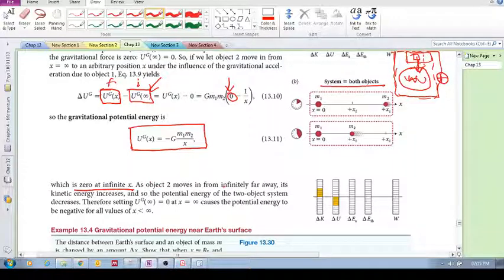But, as object two moves in from infinitely far away, its kinetic energy increases because it's accelerating. And so, the potential energy of the two-object system decreases. Just like an object moving towards the Earth—it is accelerating, its kinetic energy is increasing, but its potential energy is decreasing.